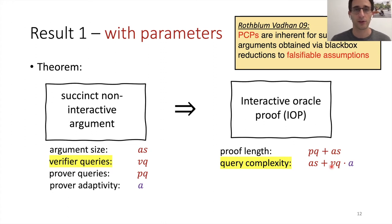There is an incomparable result of Wichs and Lombardi. They showed that PCPs are inherent in succinct arguments, but they consider succinct arguments that were obtained by a black box reduction to falsifiable assumptions. In particular, the result does not include constructions in the random oracle model. And most constructions outside the random oracle model actually use non-falsifiable assumptions. But the two results somehow complement each other.